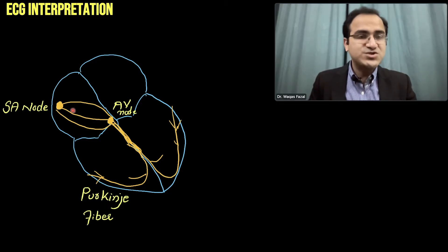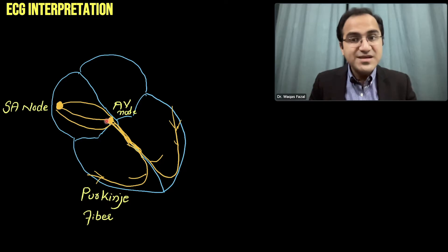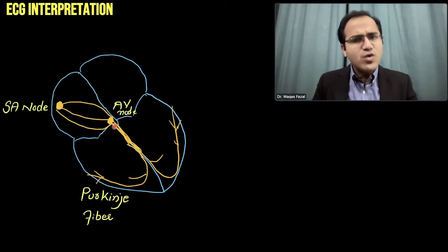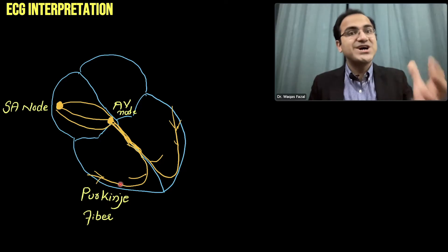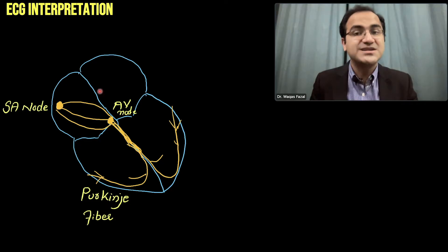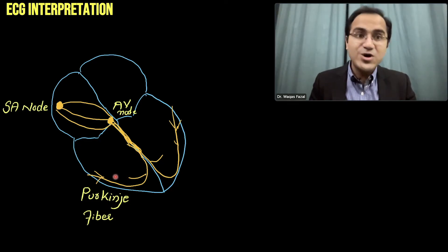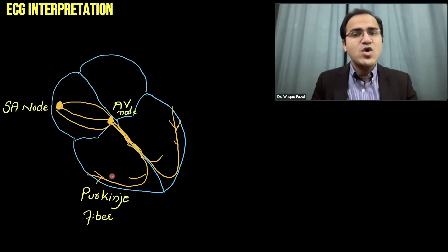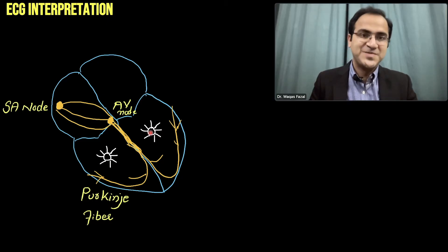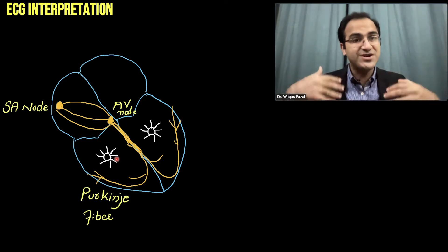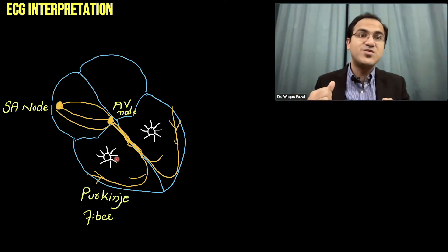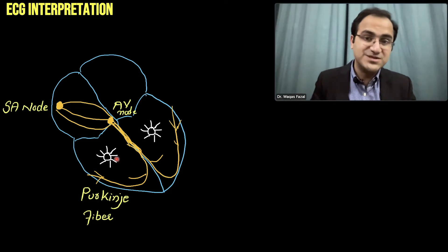What if the SA node fails to produce electrical current? Then the AV node takes charge of the heart and runs the electrical rhythms. What if the AV node also fails? In such a case, the Purkinje fibers take charge and produce electrical currents. If the Purkinje fibers also fail, then the ventricular tissue itself produces electrical currents to cause contraction — a beautiful four-stage fail-safe mechanism.